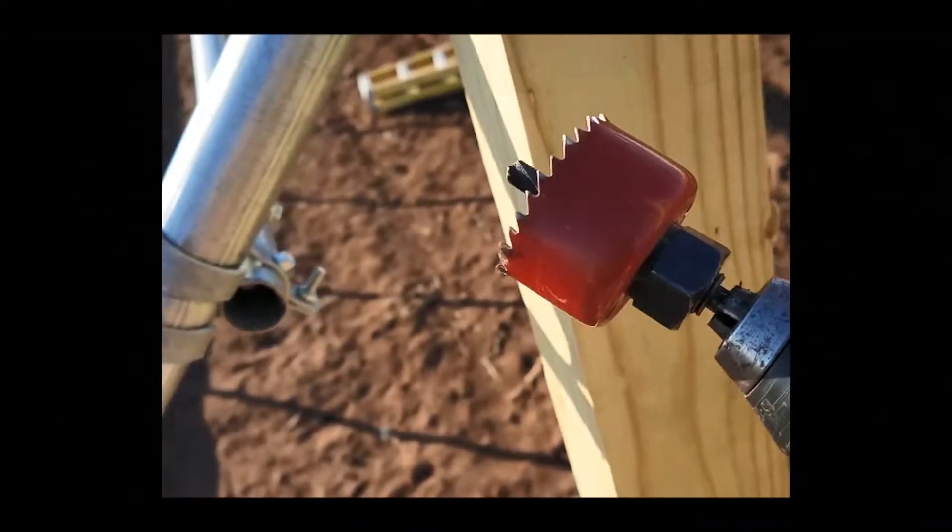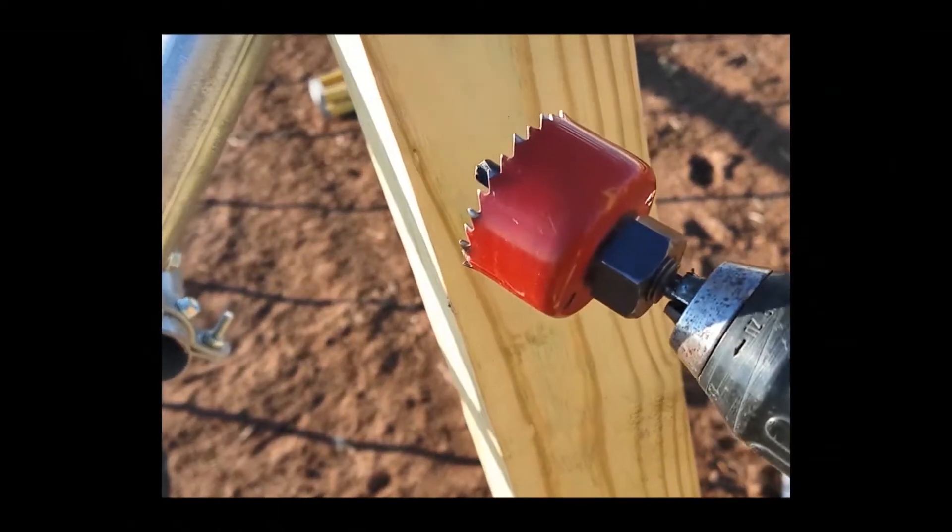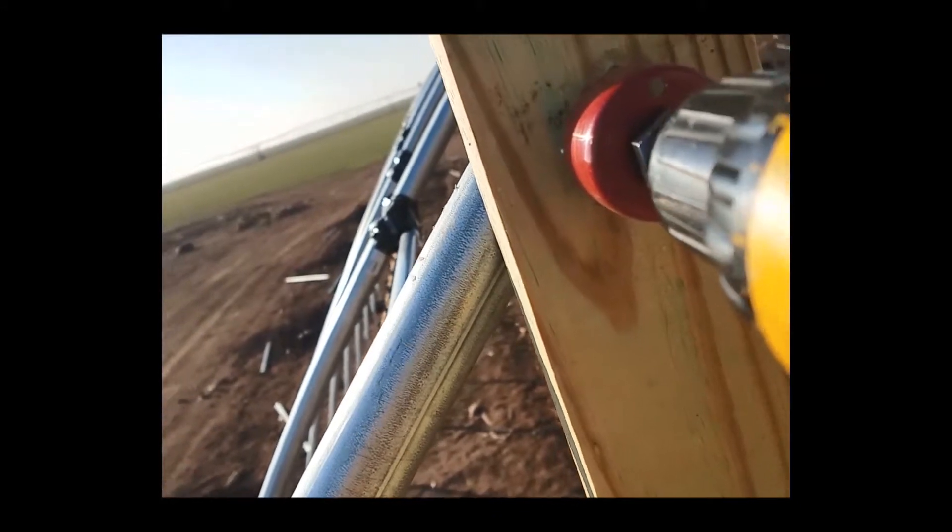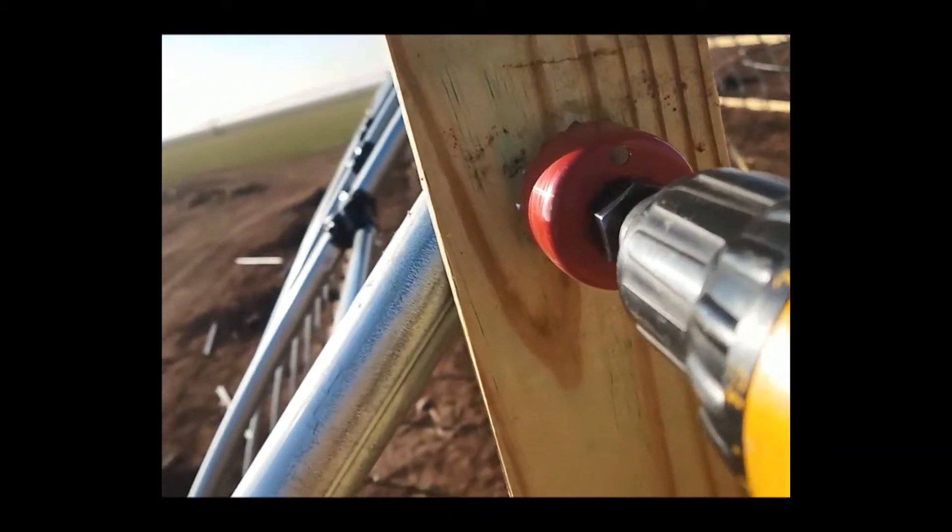I just measured the diameter of our washers, made sure we had a hole saw big enough. What I'm gonna do is line it up where it's right smack in the middle of that hole and then drill a hole. I'll show you how to do this.